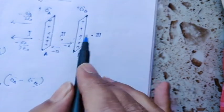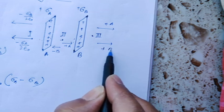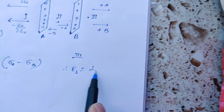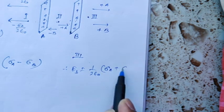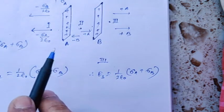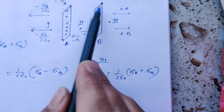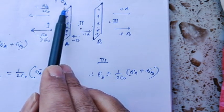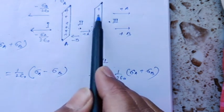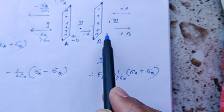For the third region (right of plate B), for plate A the field is positive (to the right), and for plate B also positive (to the right). Therefore E3 = (1/2ε₀)(σA + σB). Also note that any one of these sigma values can be negative — meaning the plate could be negatively charged. Suppose sigma B is negative (negatively charged plate). For that case, the electric field direction will be changed accordingly.